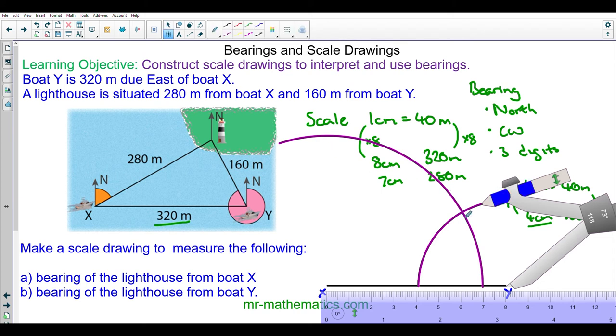You can see where the two arcs meet is our lighthouse and I'll call this L. Now I'll draw the line from X to L and the line from Y to L. I'm going to remember to include the north lines from X, from Y, and from L.